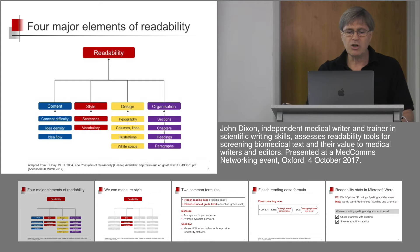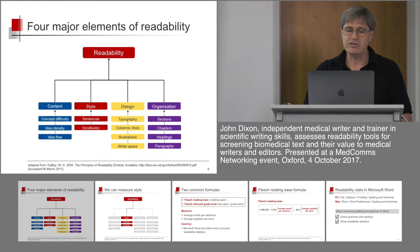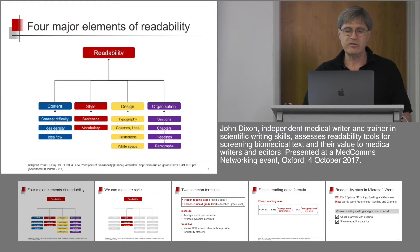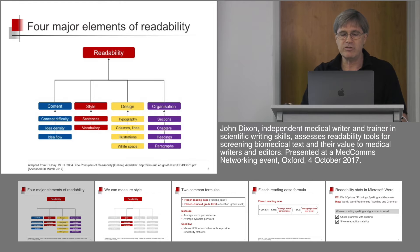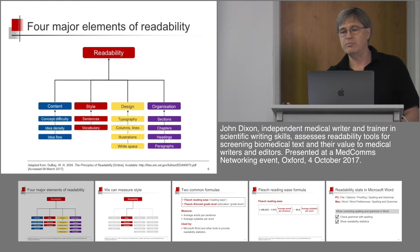So what do these mean? Content refers to the difficulty of concepts, the grouping of ideas, and the flow of ideas within a document. Style refers to the sentences and the vocabulary — how difficult are the sentences, how difficult are the words? Design refers to the appearance: fonts, typography, columns, lines, white space, illustrations. And organisation refers to the way a document is organised into sections, chapters, headings and paragraphs.